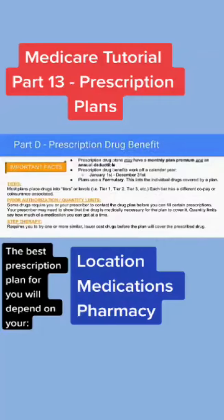Now we're going to talk a little bit more about Part D prescription drug plans. Part D prescription drug plans are also not standardized, but they do all have a similar framework. That framework is going to include a monthly premium and a deductible on some medicines. Then you're going to decide what pharmacy you're going to use, and we will look at your list of medicines and decide what plan is the best for you, because every Part D prescription drug plan has a different formulary.